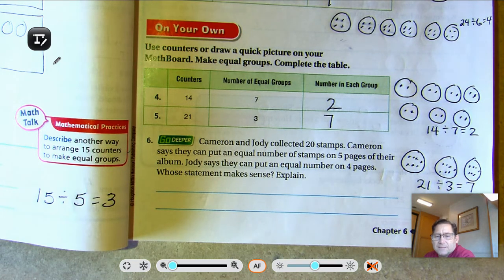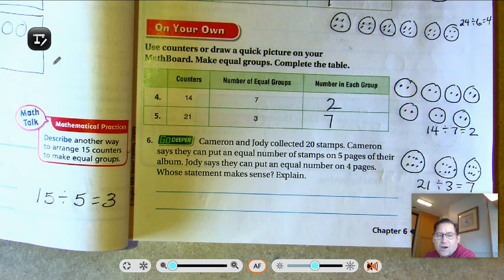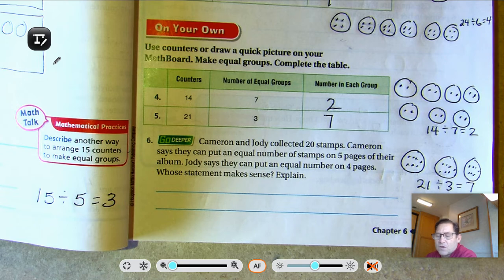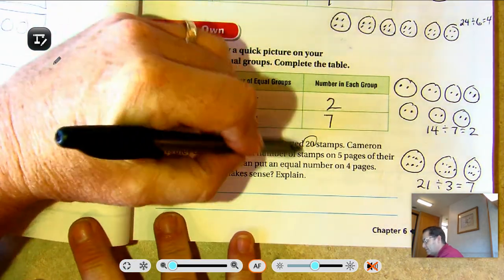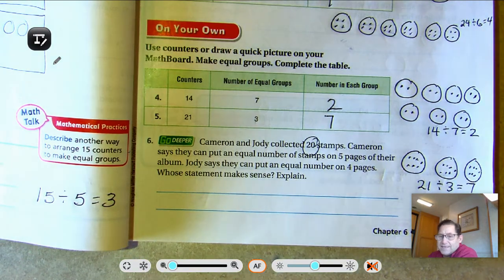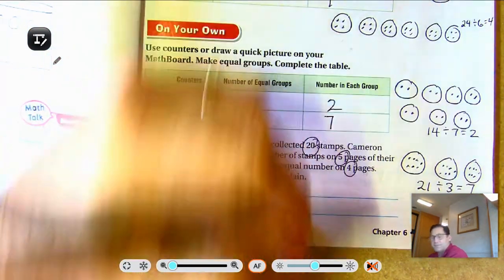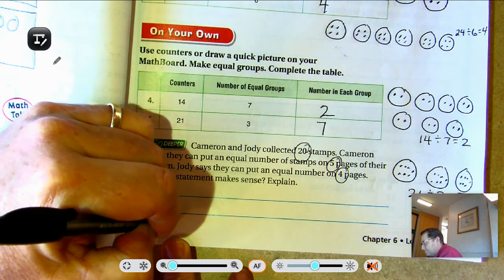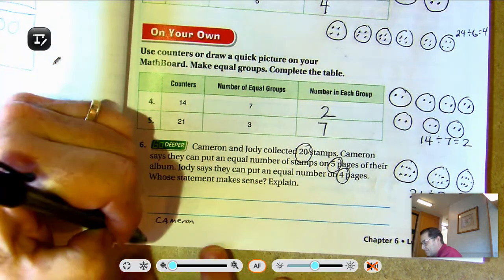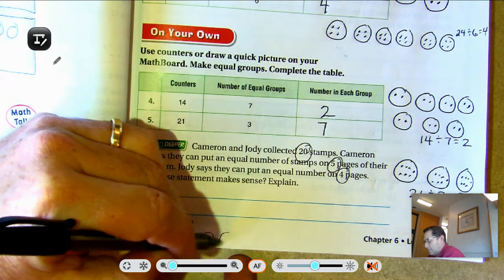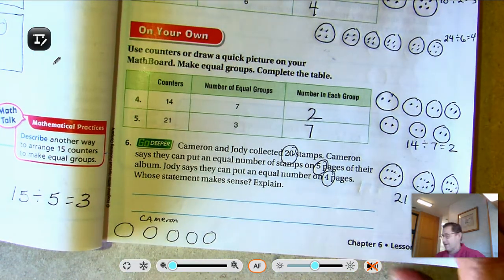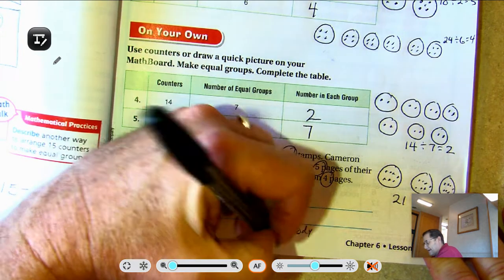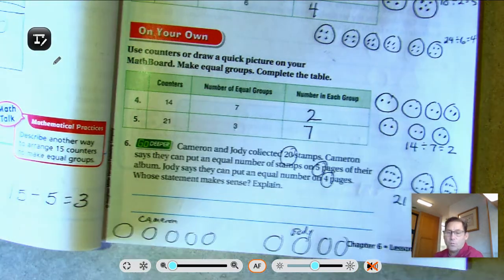Number 6, Cameron and Jody collected 20 stamps. Cameron says they can put an equal number of stamps on 5 pages of their album. Jody says they can put an equal number on 4 pages. Whose statement makes sense? Well, so what we're saying here is the number of stamps isn't going to change. They have 20 stamps. The pages represent the groups. So Cameron says 5 groups. All right, so draw 5 circles for Cameron. And Jody is saying I'm going to use 4 pages or 4 groups.